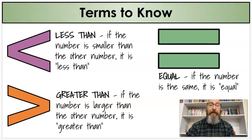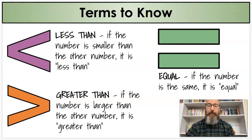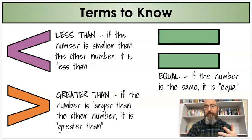We have less than. Less than means if the number is smaller than another number, it's less than it — it's smaller. Greater than is this symbol. If the number is larger than the other number, it is greater than. We're always comparing the first number to the second number, and that's how we do that.